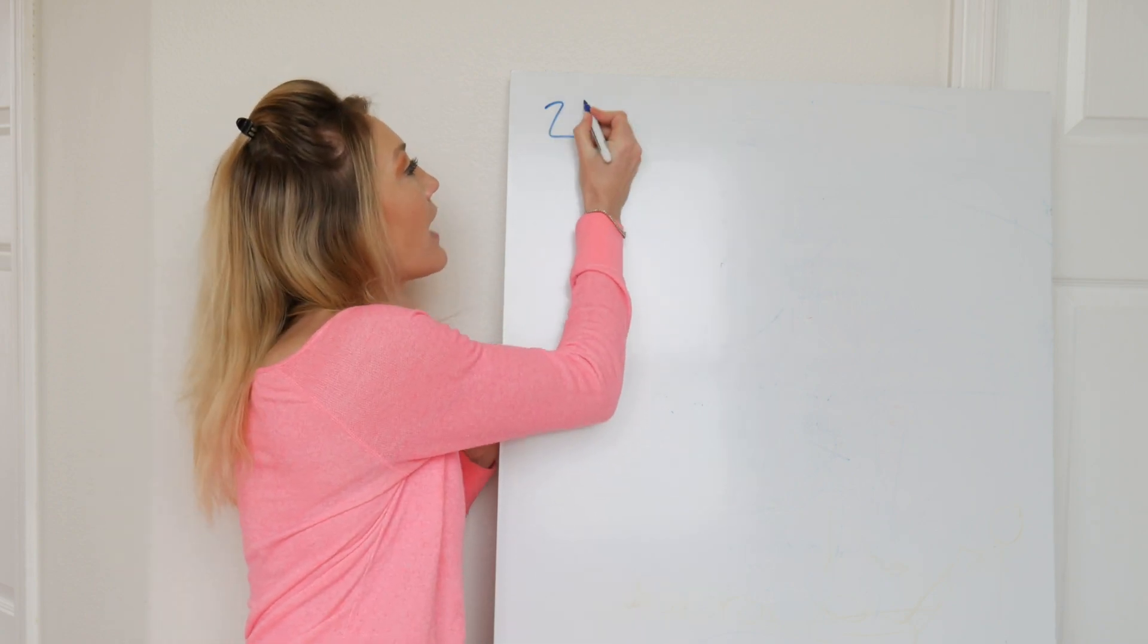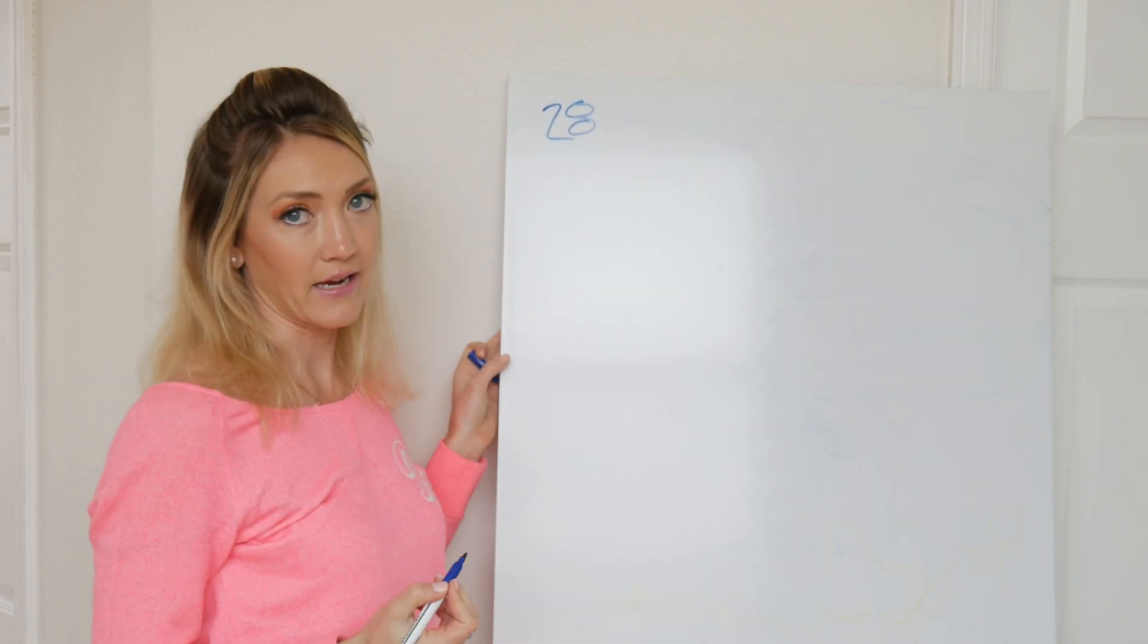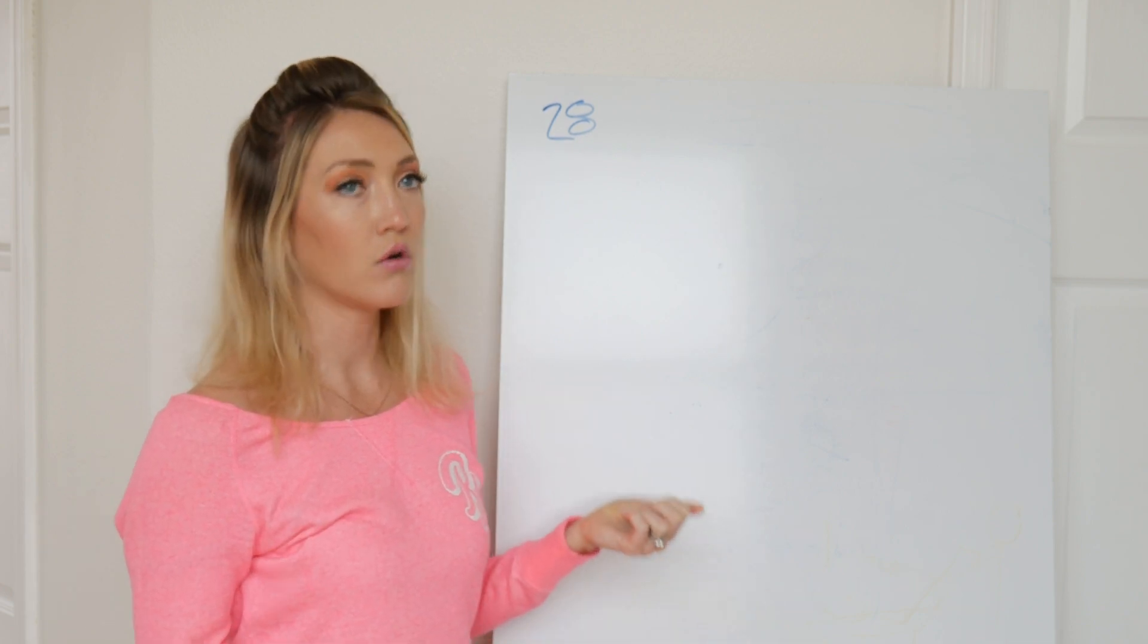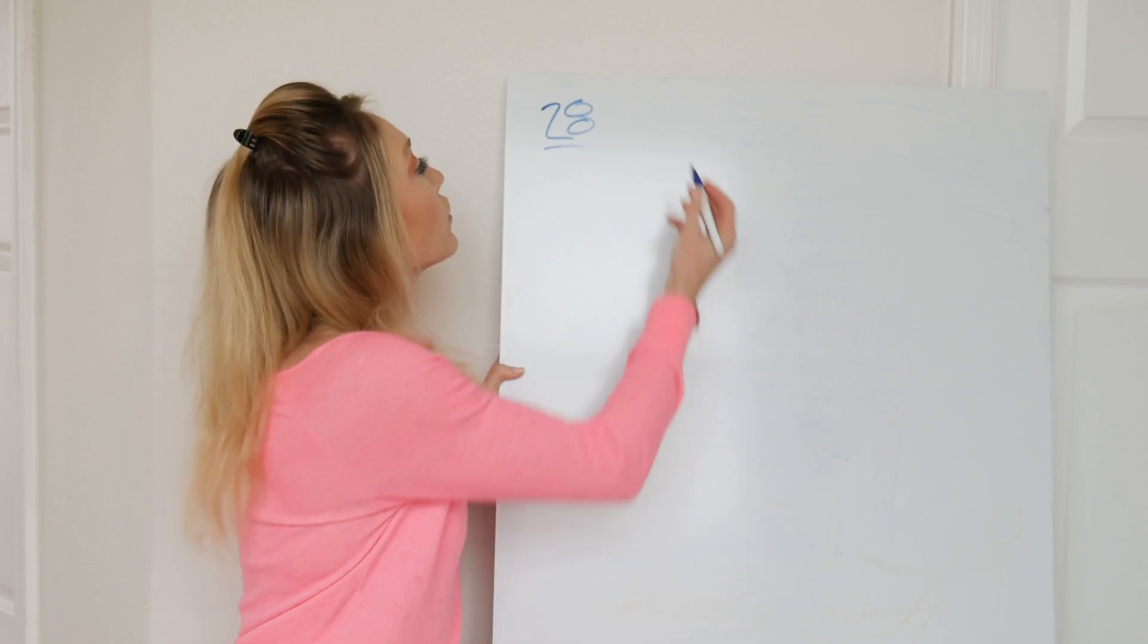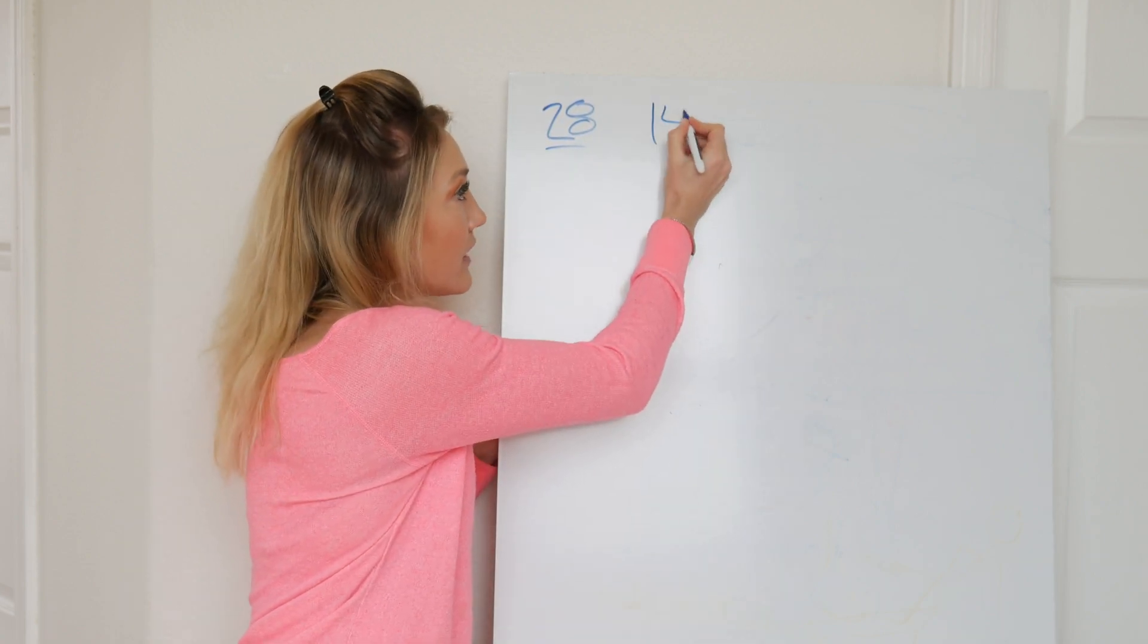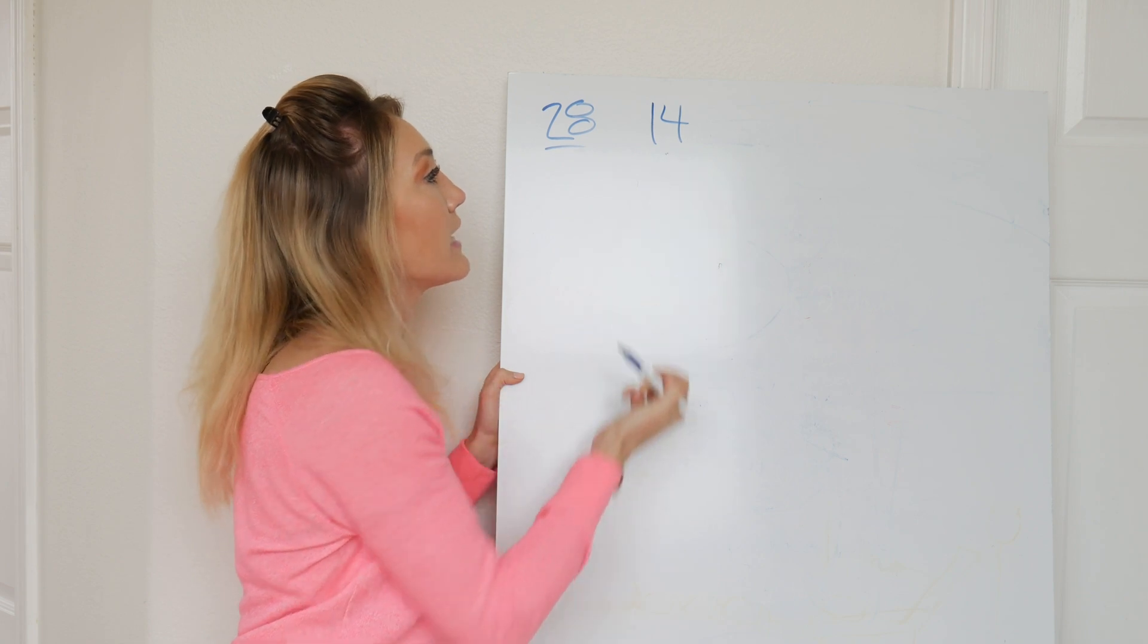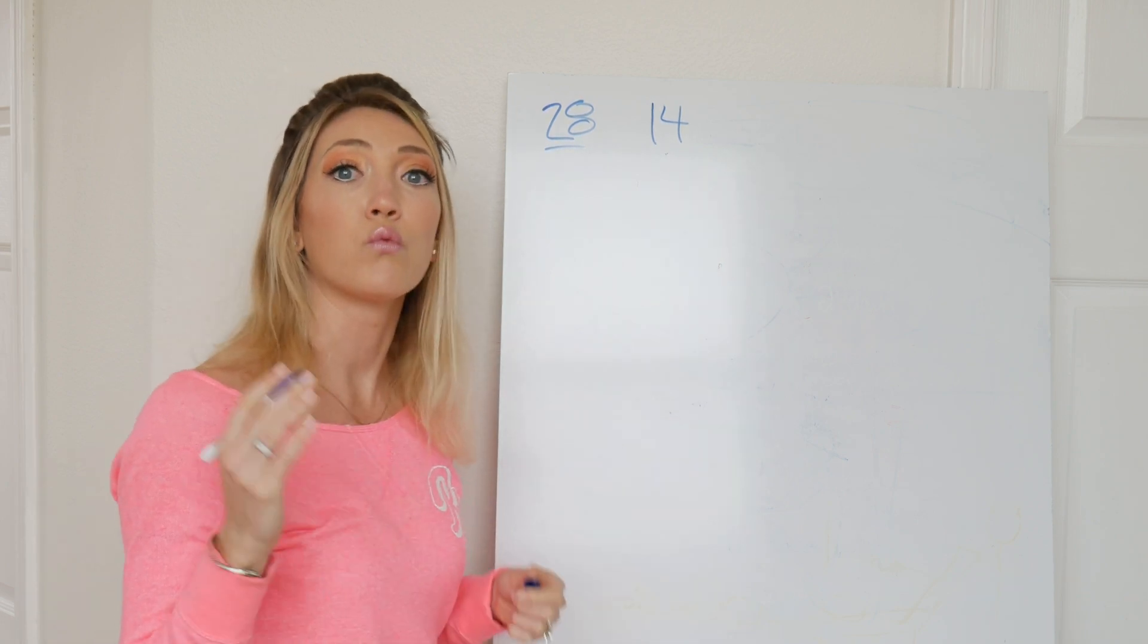So, the average female has a 28-day cycle. You may have a little bit shorter or a little bit longer cycle, but for the purposes of our example, you're going to ovulate, assuming you have the 28-day cycle, about 14 days into your cycle, so right in the middle.